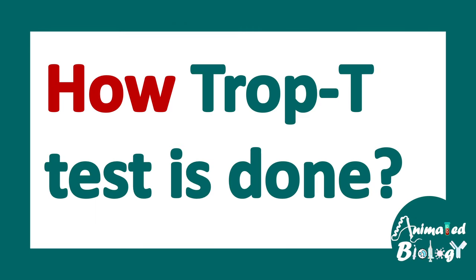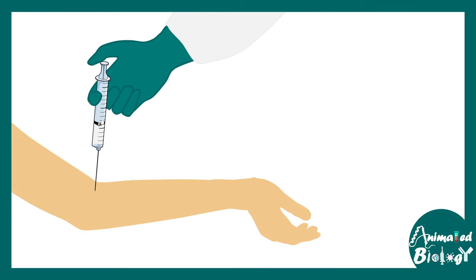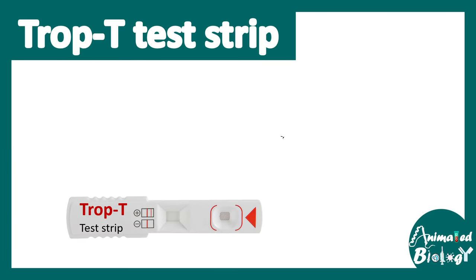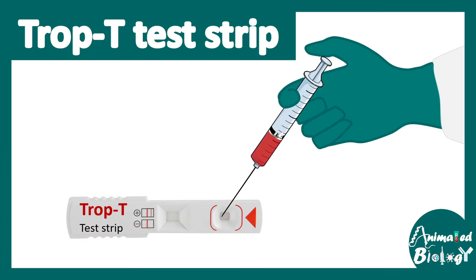So how is the TROP-T test done? It's very simple — the technician takes a small amount of blood and puts it on a TROP-T test strip. The blood diffuses through a capillary-like structure in the strip, where there are pre-loaded antibodies for TROP-T and antigen.